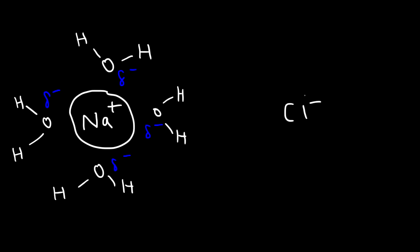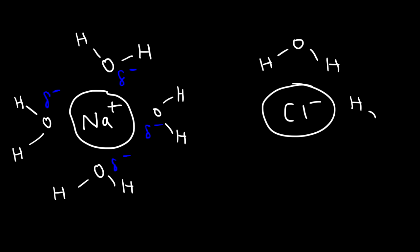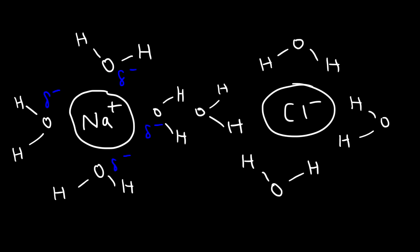So at this point the sodium ion is dissolved in water, surrounded by water molecules. And the chloride anion — anions have negative charges — they're surrounded by the hydrogen atoms of water. The hydrogen atoms contain a partial positive charge and so they're attracted to the negatively charged chloride ion. Water basically stabilizes it.